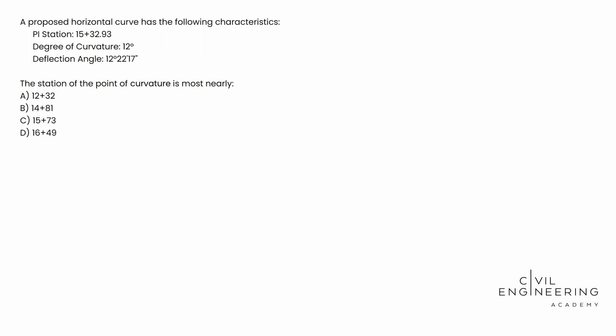Here's what the question says. A proposed horizontal curve has the following characteristics. We see that it gives us a PI station and degree of curvature, a deflection angle, and then it asks us the station of the point of tangency is most nearly what? We see our four options available to us in stations.